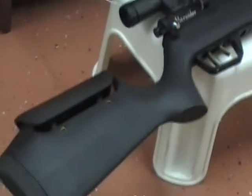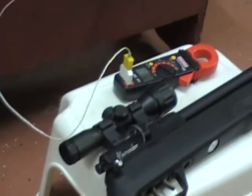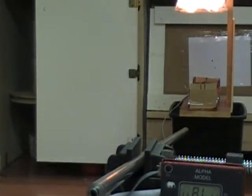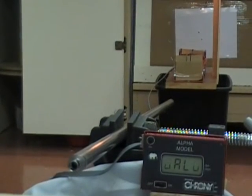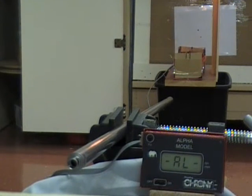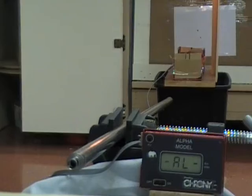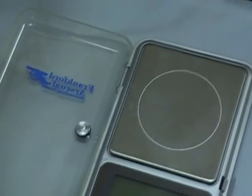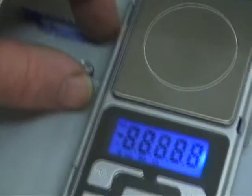Also, I've got a Marauder rifle here which I'm going to shoot across the chronograph also, so we have a little bit of a reference, just so we can have another velocity to look at. I'm going to get this set up again. One thing we have to do is weigh the pellet.